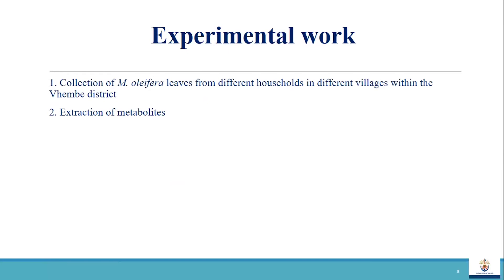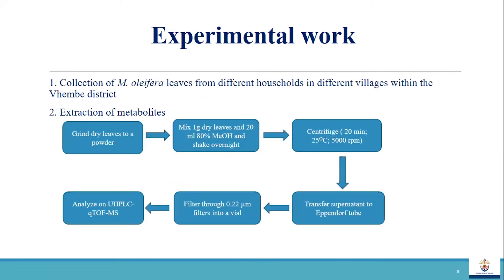We collected 130 leaf samples of Moringa oleifera from different households in different villages around the district. We sun-dried them, then ground the leaves to a powder. We mixed one gram of the leaves with 20 mL of 80% methanol and shook it overnight — this is where the metabolites are extracted. Thereafter, we centrifuged under the given conditions, transferred the supernatant to an Eppendorf tube, filtered it through a 0.22 micrometer filter into a vial, and then sent it to the LC-MS for analysis.